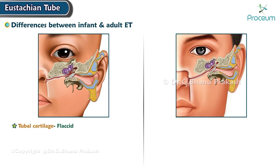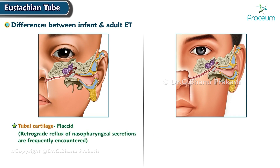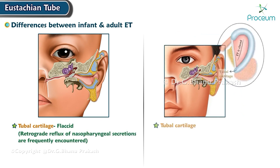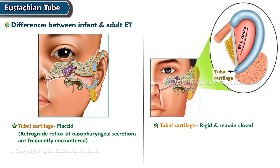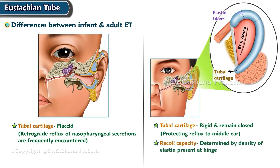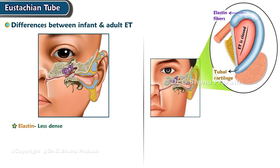The tubal cartilage is flaccid in infants, due to which retrograde reflux of nasopharyngeal secretions is frequently encountered. In adults, it is rigid and remains closed, protecting against reflux to the middle ear. The recoil capacity of the tube is determined by the density of elastin present at the hinge. Elastin is less dense in infants, reducing the efficiency of recoil so the tube doesn't close properly.